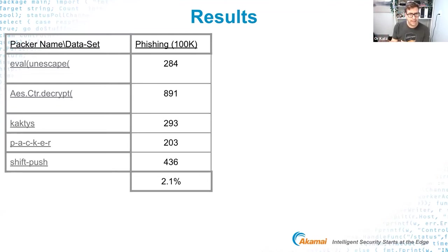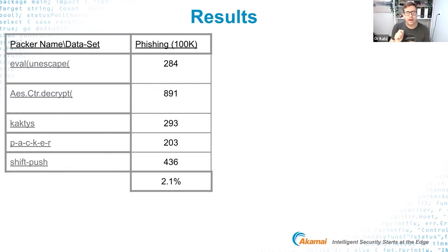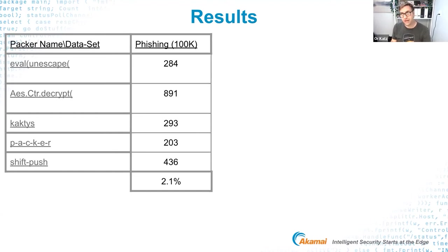Now it was time to validate this approach on actual data sets. The first data set was a phishing data set with over 100,000 files. It had a lot of noise and wasn't as stable as I'd like, but I was able to see that 2.1% of the files examined were matched by the pattern-based signature capability I created. This represents new detection — detection I didn't have before — because those constantly-changing JavaScript files were previously impossible to detect with signature or hash-based methods.